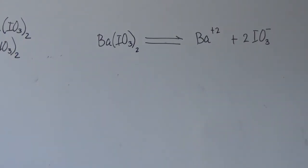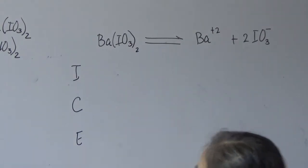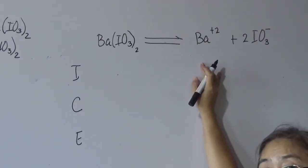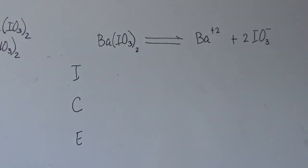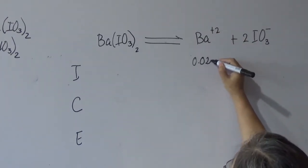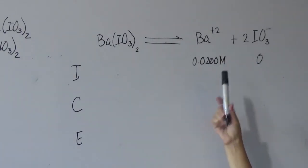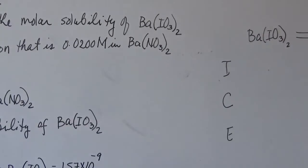Setting up the ICE table: Initial, Change, Equilibrium. Initially, since barium iodate is dissolved in barium nitrate, the barium ion already has an initial concentration of 0.02 molar, while iodate is zero. This differs from 9.3, where both barium and iodate started at zero because the solvent was pure water.